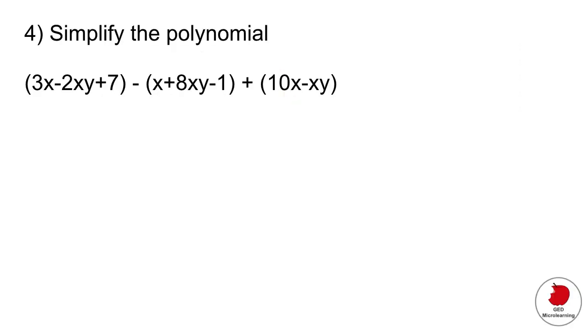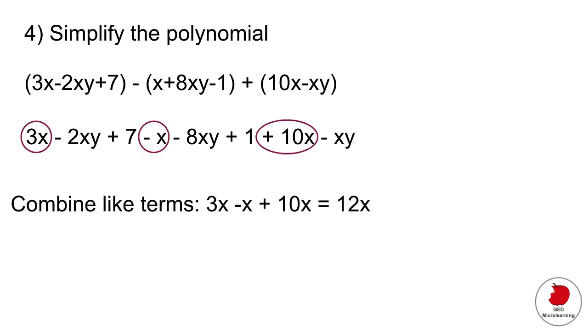If we go ahead and simplify the expression and multiply everything out, we would end up like this. What you want to do now is add like terms, meaning all the x's together. So 3x minus x plus 10x. If we combine those like terms, we end up with 12x. And then we're going to do the same for those numbers that have the xy. That gives us minus 11xy. And then for the whole numbers. Then our expression would look like this.